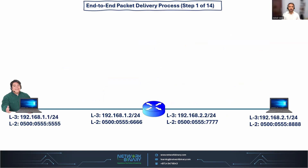Before diving into this slide, let me explain the topology I'm going to use. We have the sender on the left side — the IP address is 1.1, and this is the layer 2 MAC address. On the right side we have the receiver with IP address 2.1, and that's the layer 2 MAC address. We have one router between the devices. The IP address on interface GigabitEthernet 0/0 is 1.2, and on interface 0/1 it's the other side. The MAC addresses we can see on this screen.